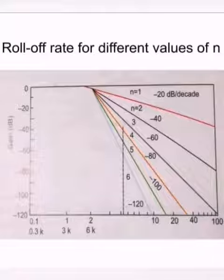This means that as the value of n or the order of the filter is increased, the actual stop band response of the filter approaches its ideal stop band characteristics. As you can see in the diagram, higher the value of n, more it is close to the ideal characteristics.